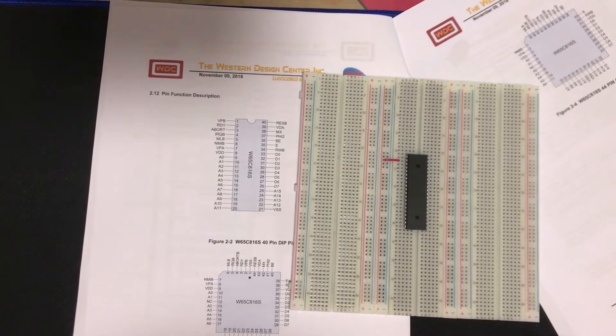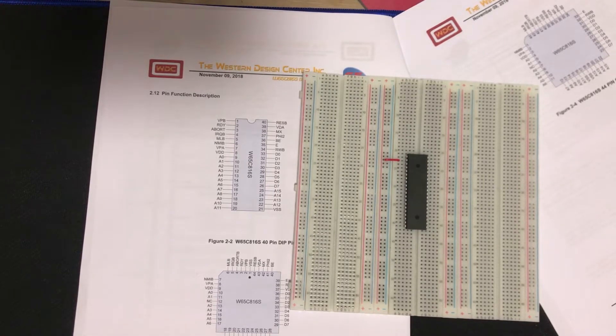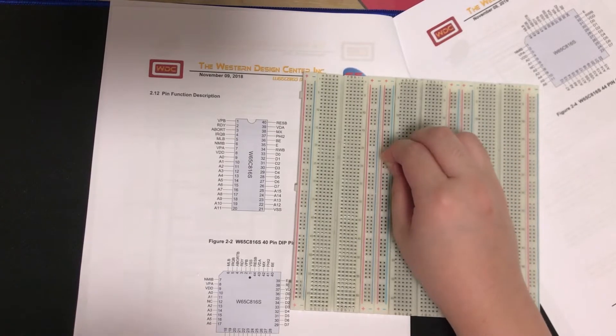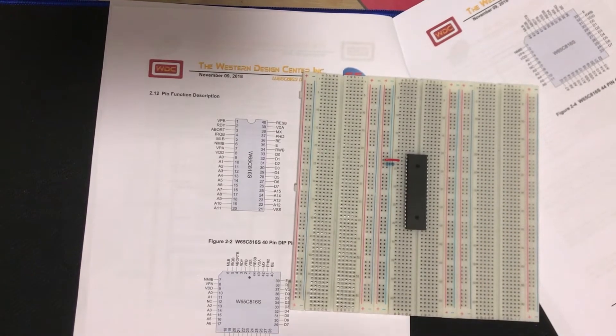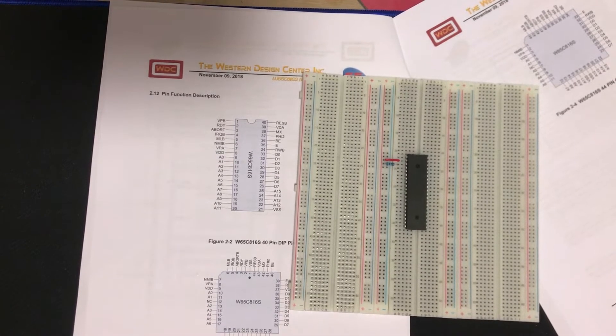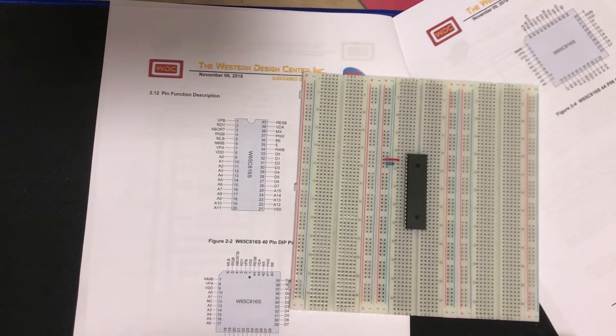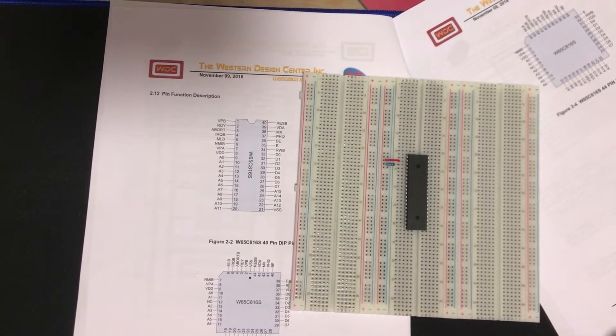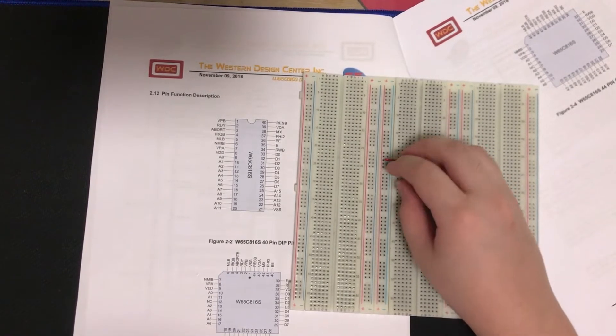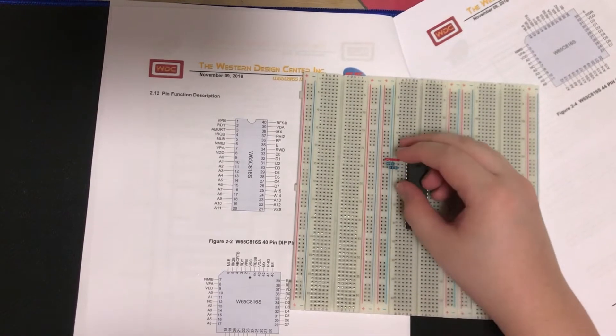The next pin is abort, and they actually did a little typo here, they forgot the B. This is an inverting input. We don't want it to trigger and abort right now, so I'm going to tie it high using a 1K resistor. The next pin is IRQB. Just like the 6502, this is used to signal an interrupt. By doing this, we can set the pin low, and this will trigger an interrupt if the processor allows it. For now, we're just going to tie that high because we don't want to be triggering any interrupts that we don't want.